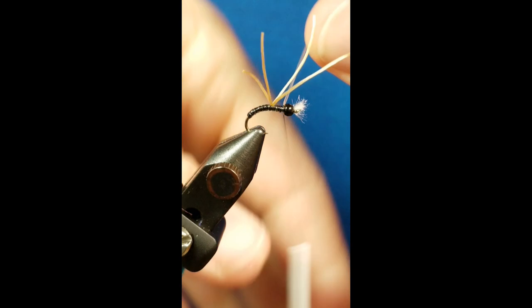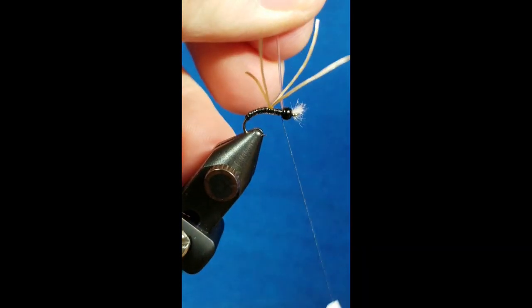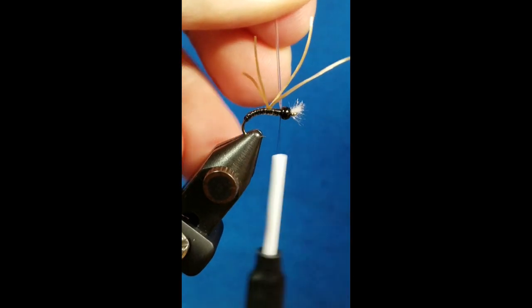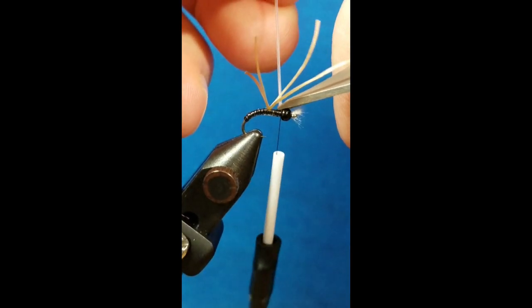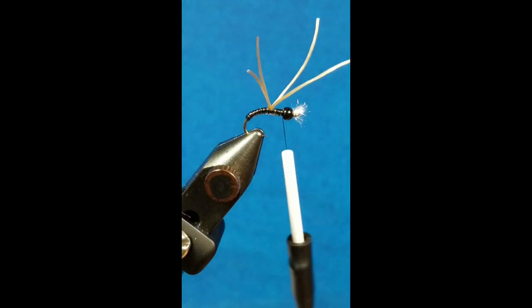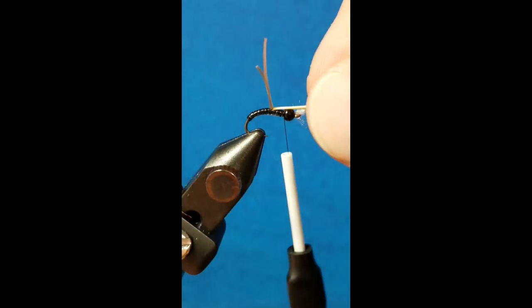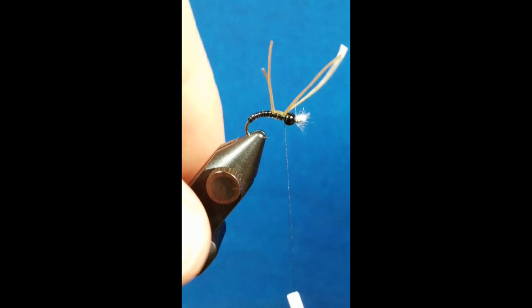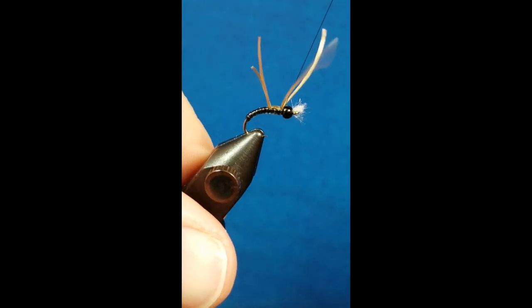When I get to the bead, I want to get at least one solid wrap in behind it, and then I like to take four or five right in front of it just to really lock it in place. Come in and snip the excess. Two of these are going to pull right over the front, right on top. Catch them with one or two wraps, make sure they're nice and snug, then you can come in and snip off the excess.